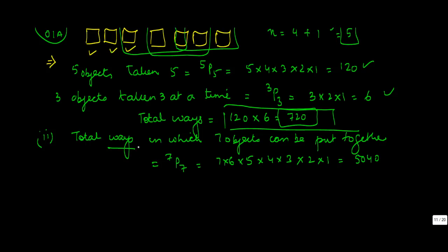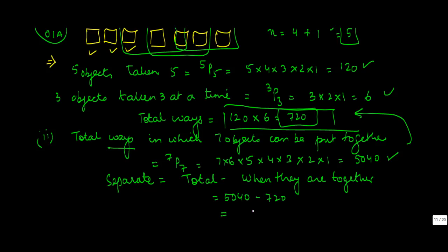Now total ways in which they can be arranged are 5040, of which 720 are together. So they are separate in how many? Total minus when they are together - isn't it simple? Which is 5040 - 720 = 4320, which is your answer.